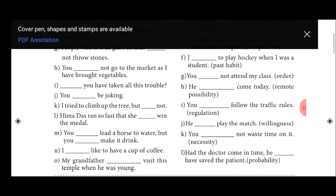I sentence: You dash follow the traffic rules. Within bracket regulation. That is must. You must follow the traffic rules. J sentence: He dash play the match. Willingness. Mostly the willingness is will. He will play the match. K sentence: You dash not waste time on it. Necessity is the word need. You need not waste time on it.